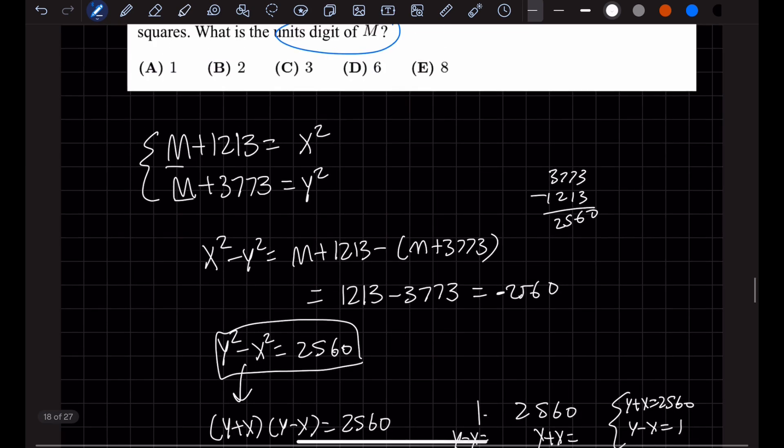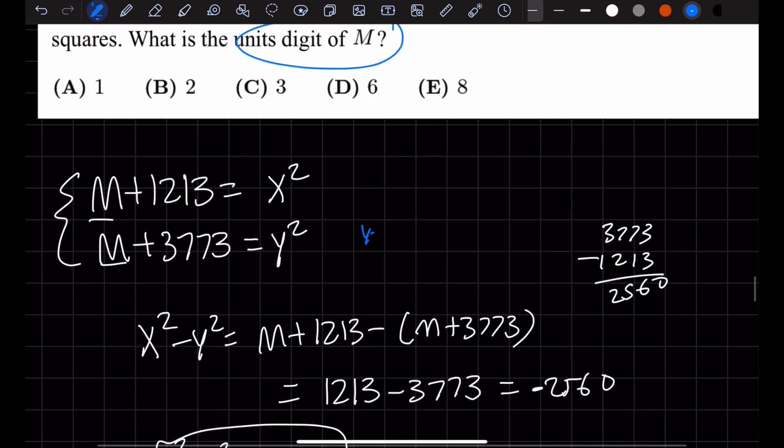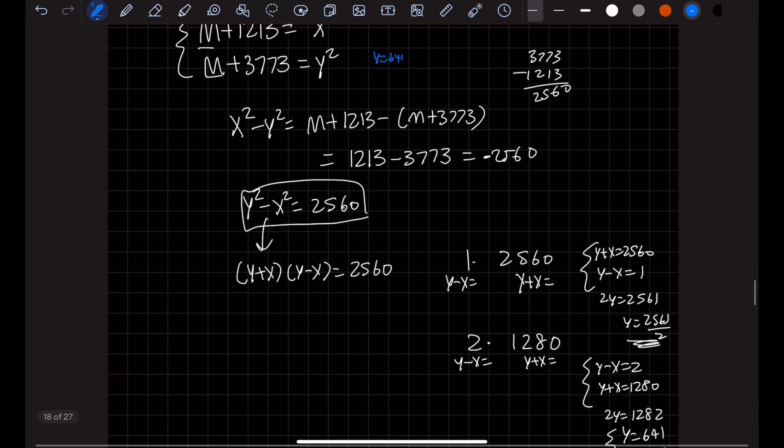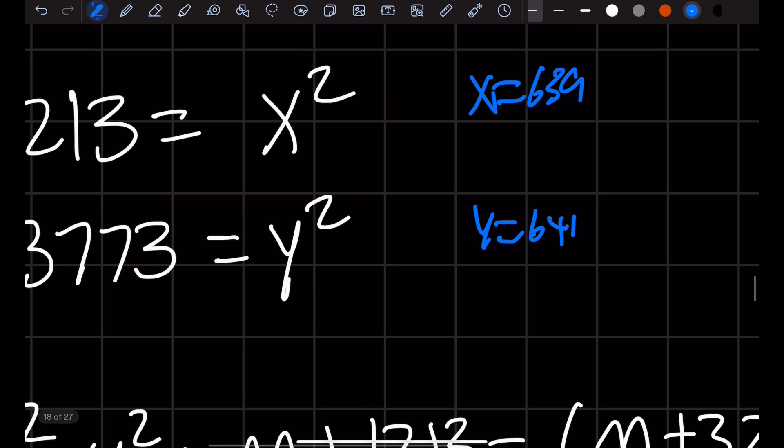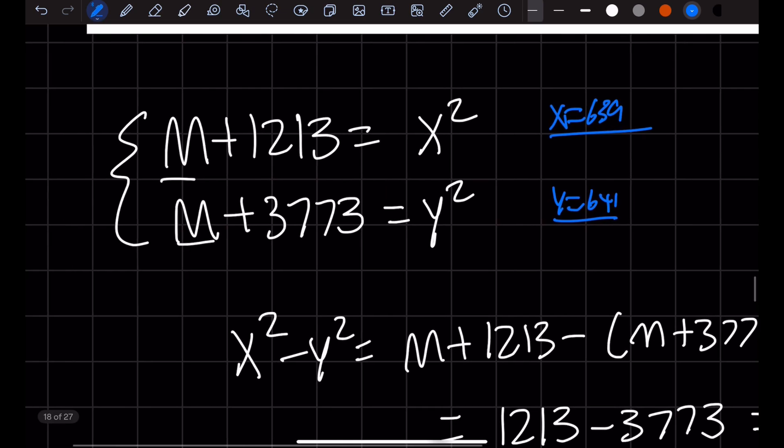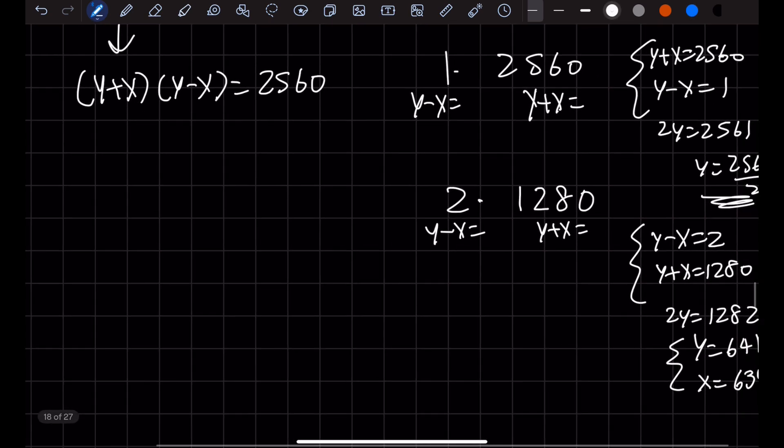Setting this up, x would be 641 minus 2, which is 639. So if y is 641, we want M to be the largest possible, right? M is the greatest integer. So y equals 641 and x equals 639 are contenders. Can we get larger numbers for y or x to maximize M? I don't know, so we should keep doing this method.